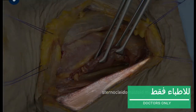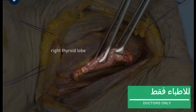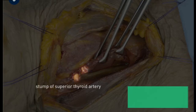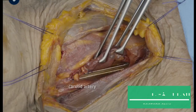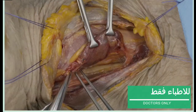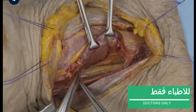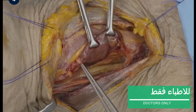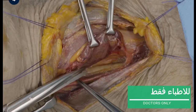The sternocleidomastoid muscle, the right thyroid lobe, and the stump of the superior thyroid artery are visible. The right superior parathyroid gland is identified and freed from the thyroid gland, preserving its branch from the superior thyroid artery.